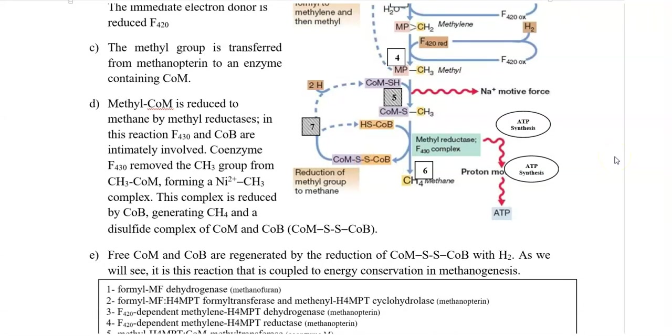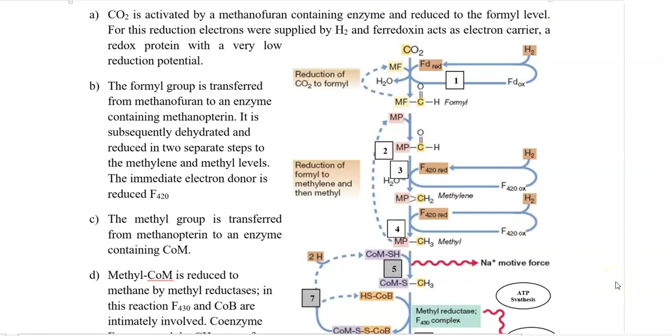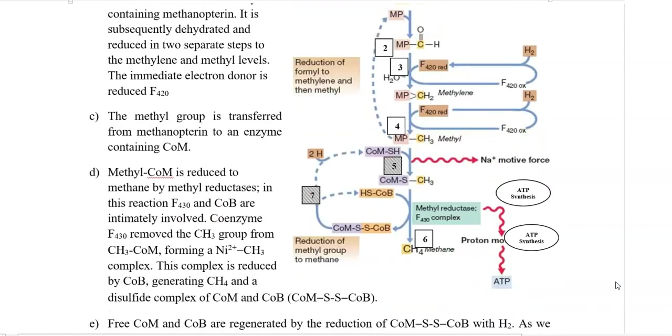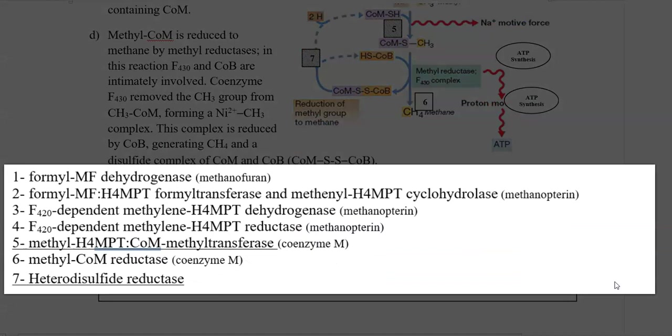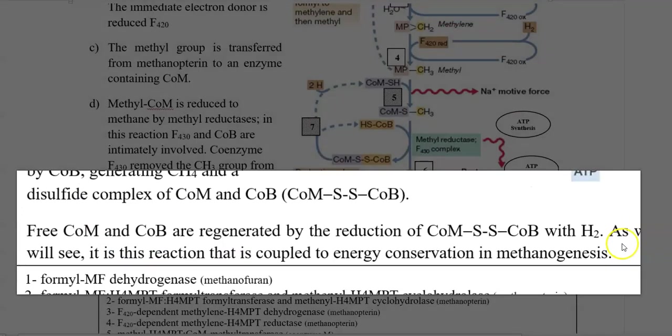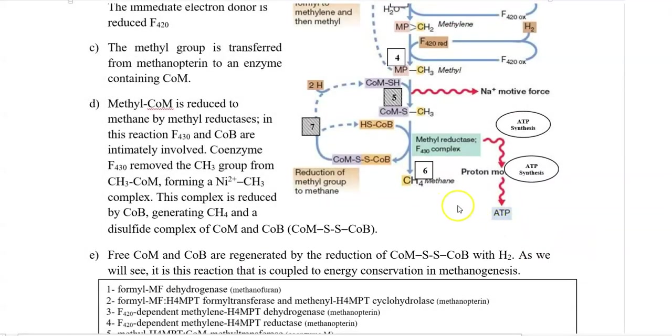After the formation of methane, in the final step, coenzyme-M as well as coenzyme-B are regenerated by reduction of the coenzyme-M and coenzyme-B containing disulfide complex with hydrogen. The various enzymes involved in this pathway have been numbered as 1, 2, 3, 4, and their respective enzyme names are provided at the end. In the final process of methane regeneration, ATP is synthesized with the help of ATP synthase enzyme that will be used for further growth and metabolism.